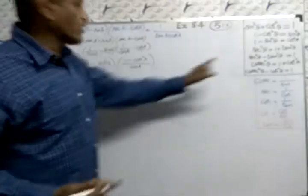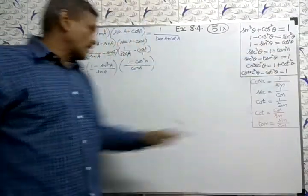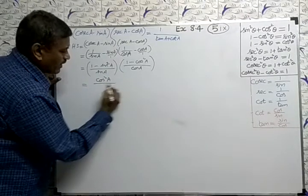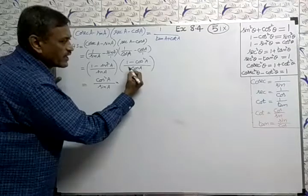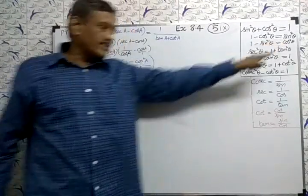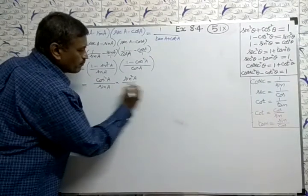Now, 1 minus sin square. We have formula. 1 minus sin square equal to cos square. So, cos square A by sin A into here. 1 minus cos square equal to formula sin square A. So, sin square A by cos A.